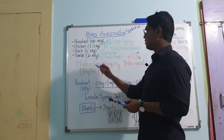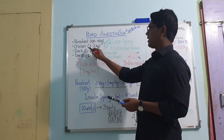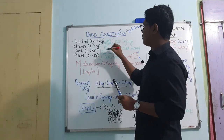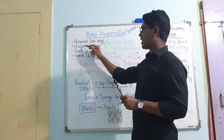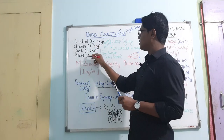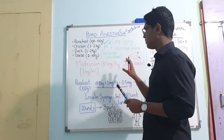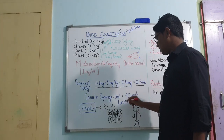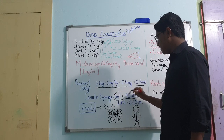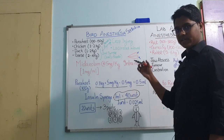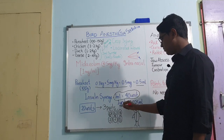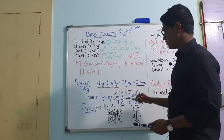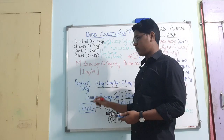For a parakeet and small chicken, you must use an insulin syringe. For adult chicken, adult duck, and adult geese, you can use a 2 ml syringe with a 24-gauge needle. Note that a 1 ml insulin syringe is divided into 40 units, so 1 unit equals 0.025 ml. We need 0.5 ml, which is 20 units of midazolam.